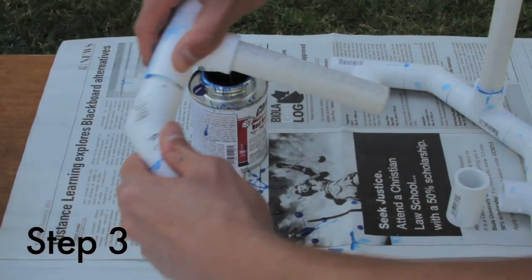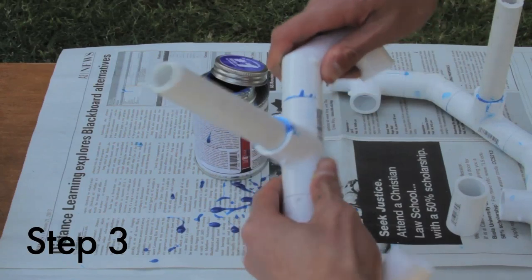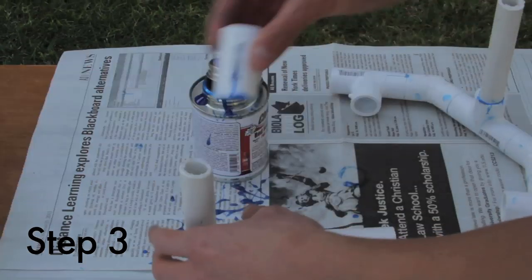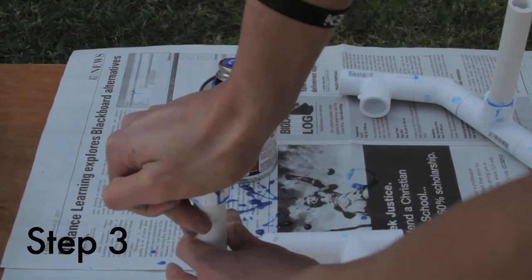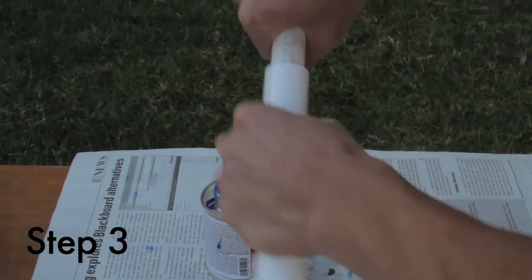Glue the elbow pieces from step one with the tee pieces from step two. Then glue those pieces together with the coupling. Try to glue these as straight as you can.